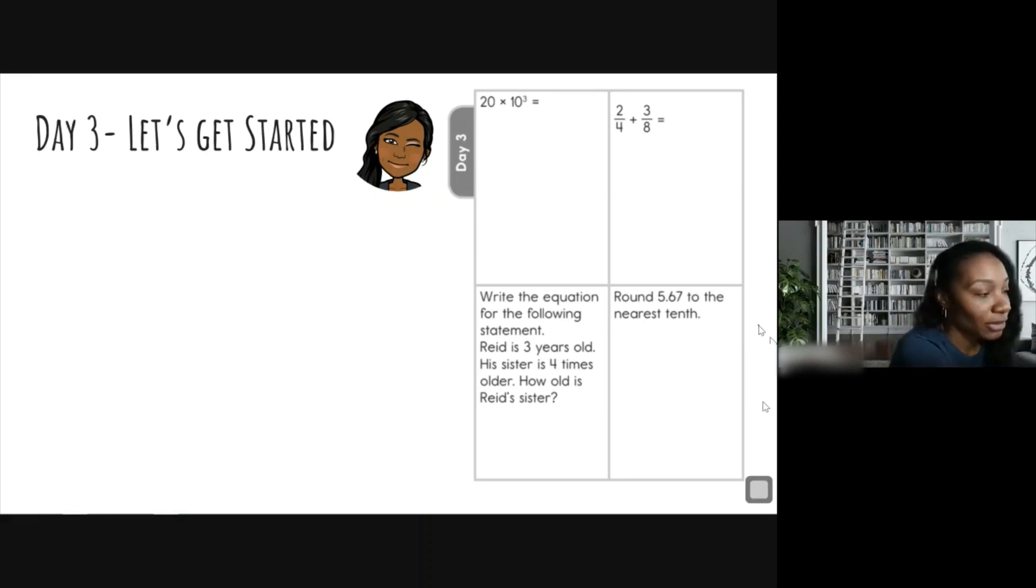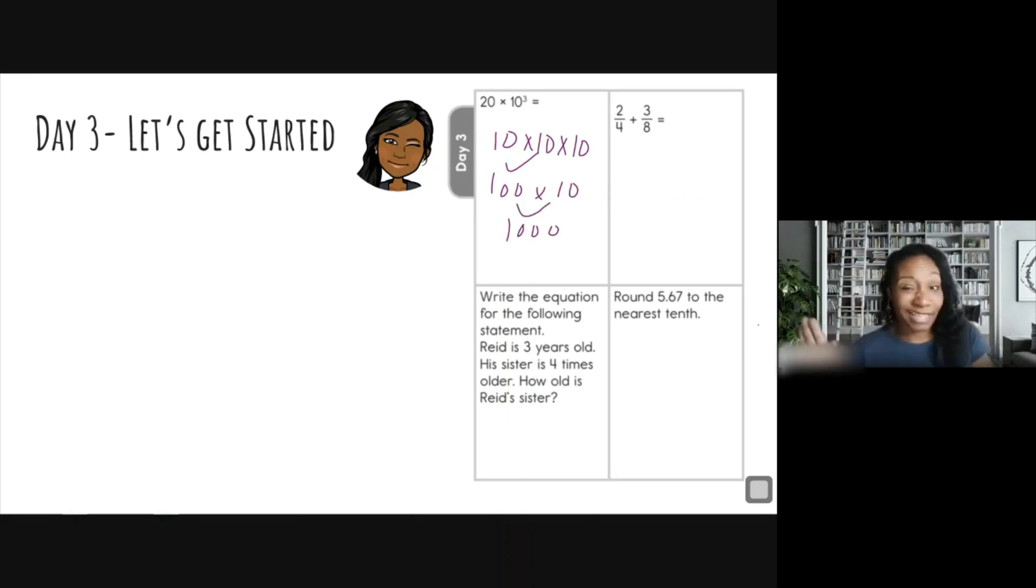So 10 to the third power is actually 10 times 10 times 10. Okay, 10 times 10 is 100. 100 times 10 is 1000. So we had to get that out of the way. We needed to know what 10 to the third power was. And 10 to the third power is 1000.